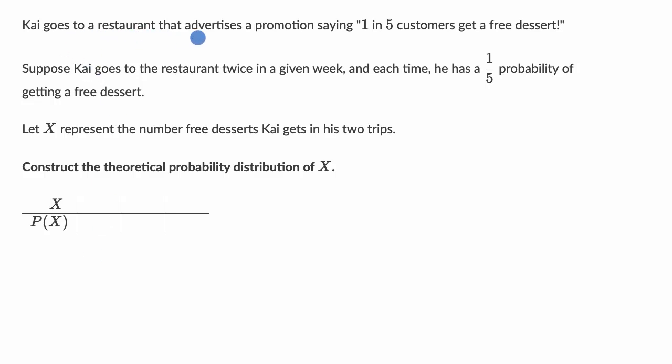We're told that Kai goes to a restaurant that advertises a promotion saying one in five customers get a free dessert. Suppose Kai goes to the restaurant twice in a given week, and each time he has a one-fifth probability of getting a free dessert.